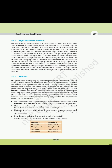Mitosis usually results in the production of diploid daughter cells with identical genetic complement. The growth of multicellular organisms is due to mitosis. Cell growth results in disturbing the ratio between the nucleus and the cytoplasm; it therefore becomes essential for the cell to divide to restore the nucleocytoplasmic ratio. A very significant contribution of mitosis is cell repair — cells of the upper layer of the epidermis, lining of the gut, and blood cells are constantly replaced. Mitotic divisions in meristematic tissues result in continuous growth of plants.